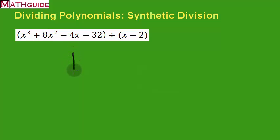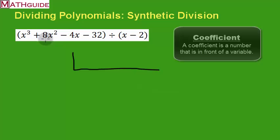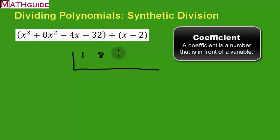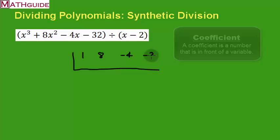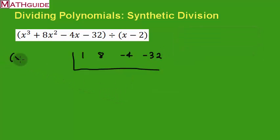Now in order to do synthetic division, we're going to make this division sign. It's upside down from what people are normally used to seeing. Then we're going to take the coefficients from this first polynomial and write them inside. So I've got 1, 8, negative 4, and negative 32. On the outside, since we're dividing by x minus 2, we actually take the opposite of this. We put a 2 here, always the opposite. That's the process, at least the setup.